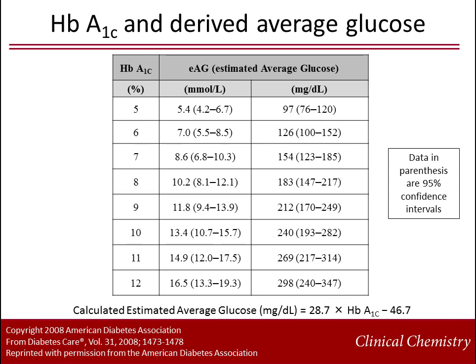Of note, the correlation of hemoglobin A1C and estimated average glucose is only an estimate. For example, a hemoglobin A1C of 7% equates to an estimated average glucose of 154 milligrams per deciliter; however, the estimated average glucose is anywhere from 123 to 185 milligrams per deciliter with 95% confidence. The potential clinical and analytical implications for interpreting estimated average glucose in this context are not yet understood. Reporting of the estimated average glucose has been endorsed by several clinical groups, such as the ADA, EASD, International Diabetes Foundation, and the American Association for Clinical Chemistry.